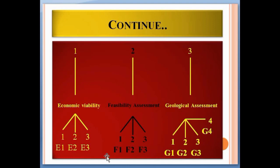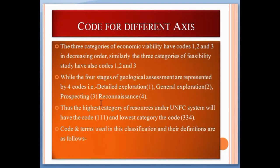The letter E is taken from 'economic', F is taken from 'feasibility', and G is taken from 'geology'. The three categories of economic viability have codes 1, 2, and 3 in decreasing order. Similarly, the three categories of feasibility study also have codes 1, 2, and 3, while the four stages of geologic assessment are represented by four codes: detailed exploration (1), general exploration (2), prospecting (3), and reconnaissance (4). Thus the highest category under UNFC will have code 1-1-1 and the lowest will have code 3-3-4.